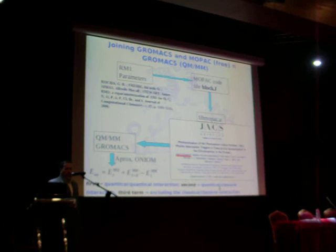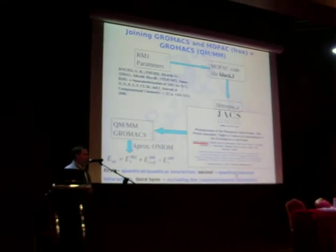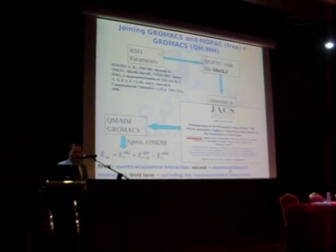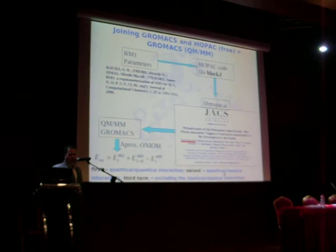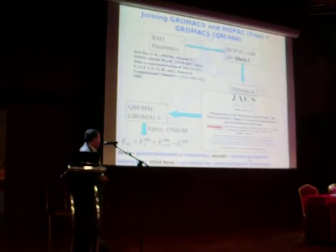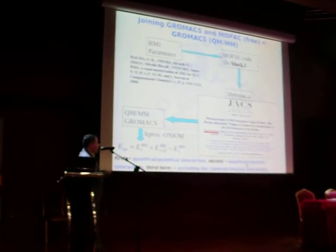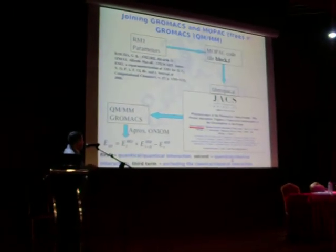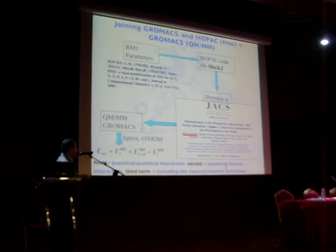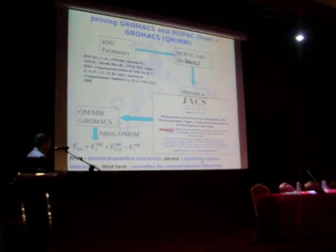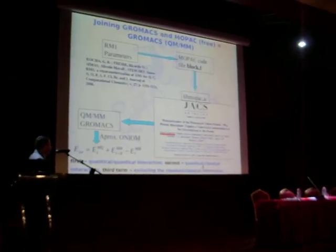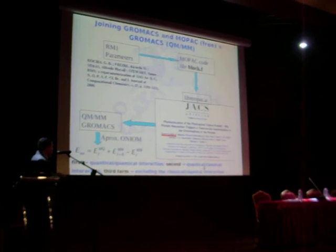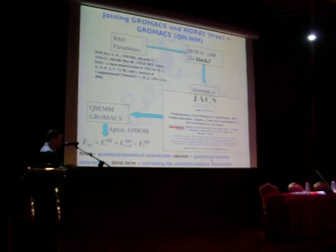With this, we compiled our GROMAX QMMM package. The approximation used in this work was the ONION, where the total QMMM energy has three terms: the first represents the quantum-quantum interaction, the second quantum-classical, and third excludes the classical-classical interactions.